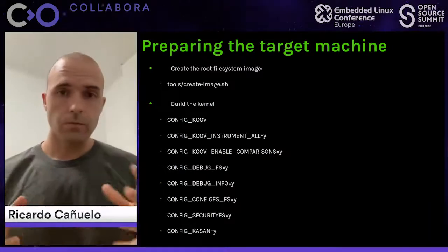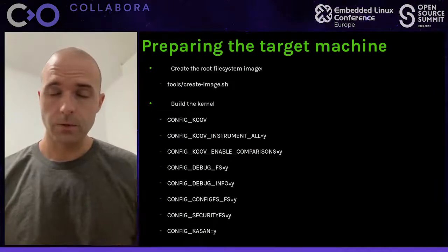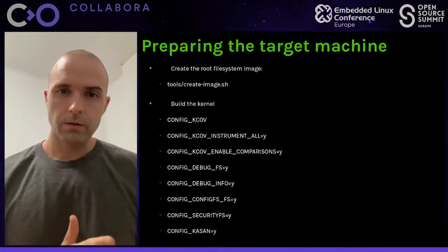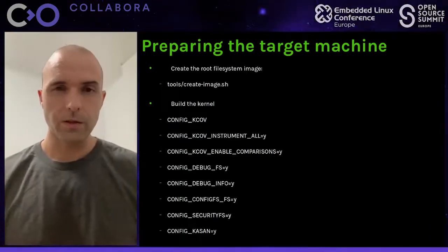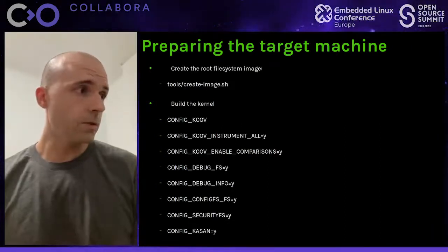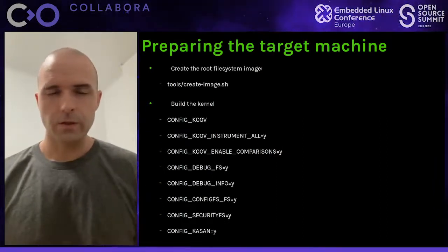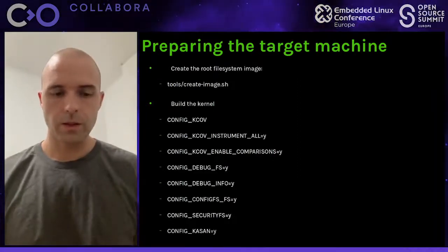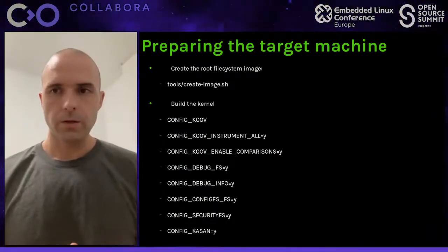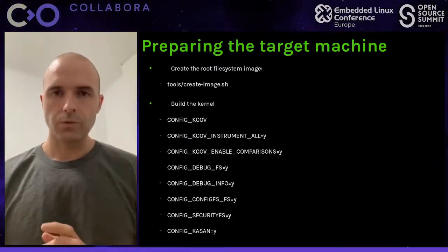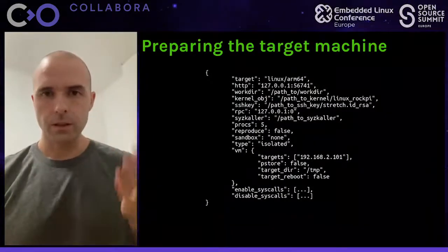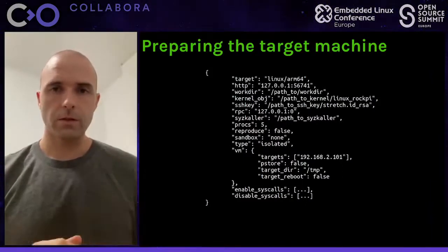Then you can bring up your board using the kernel and root filesystem you generated. My personal recommendation is to configure the bootloader so that it can boot the kernel from TFTP and mount a root filesystem via NFS, to avoid relying on an SD card. These kind of targets would probably stay in a laboratory running 24/7 for months, so you want to avoid using non-volatile media that is not too robust. Finally, we have to change some options of the configuration file to suit it to our test target — the RockPi4 board. Specifically, the type option is set to isolated, which means it will run on a dedicated board, not a virtual machine, and in the VM section our target is the IP address of the board.